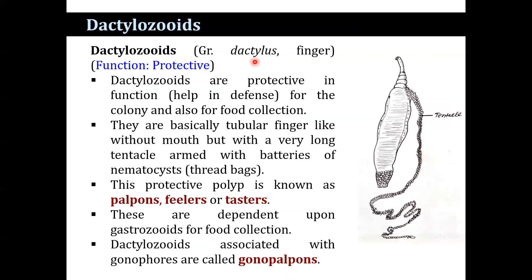Dactylozooids come from the Greek word dactylos, meaning finger. They are protective in function, helping in defense and also food collection for the colony. They are basically tubular and finger-like but without any mouth, bearing a very long tentacle armed with batteries of nematocysts. This protective polyp is known as palpone, feeler, or taster. They are dependent on gastrozooids for food. Dactylozooids associated with gonophores are called gonopalpones. The function of dactylozooids is defensive.